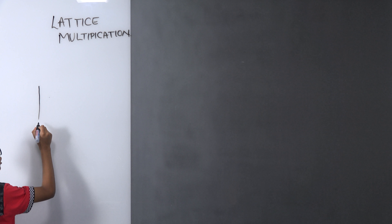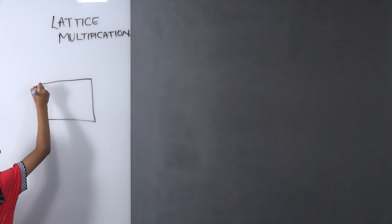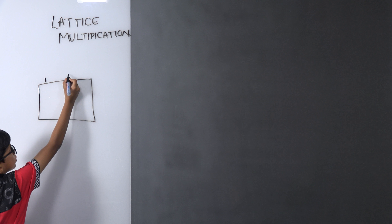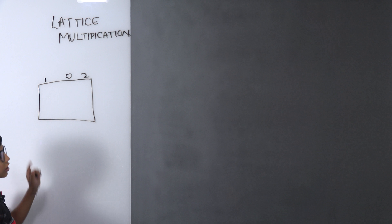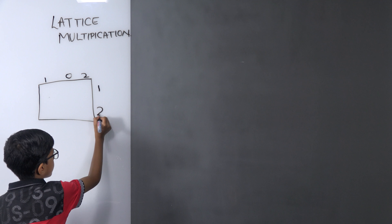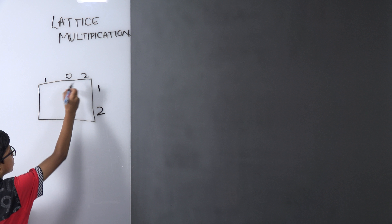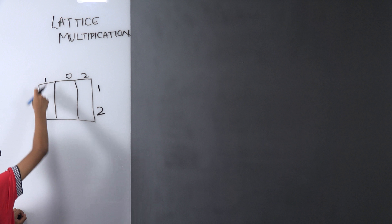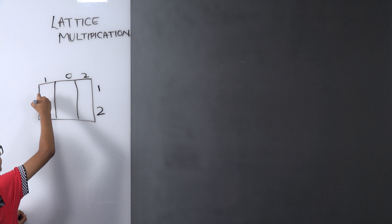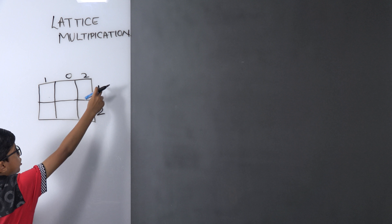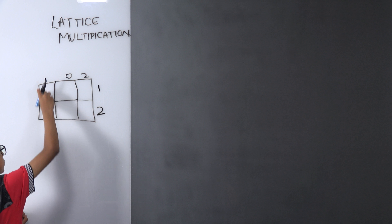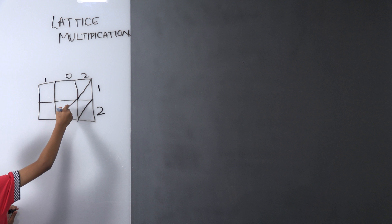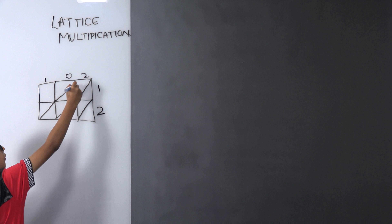First, make a square. For example, if the question is 102 × 12, write 102 on the top because it is the bigger number and 12 on the side like this. Now, there are three numbers. Make columns like this so that we can write the sum, and then make a row like this so they have a block each. Now divide this into two parts.